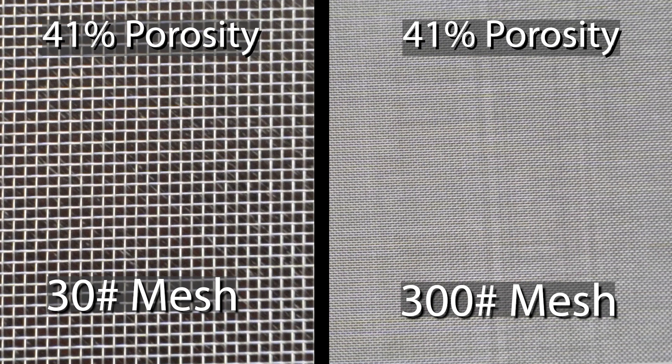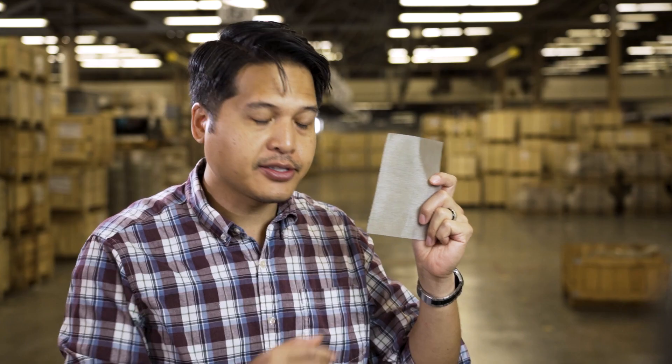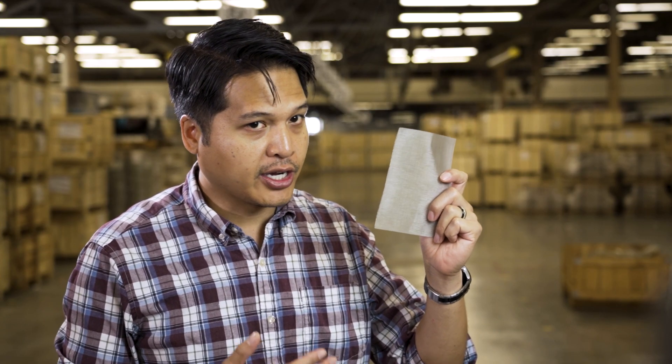As you can see, the 30-count mesh has much larger open area at 0.21 inches, as opposed to 0.0021 inches for the 300-count mesh. The 300-count mesh has a much larger surface area, which is ideal if you want to adhere a catalyst, electrolyte, or any type of substrate to it. Because there's more material, the 300-count mesh costs 20% more than the 30-count. The question is: how important is the wire mesh surface area to your electrochemical reaction?